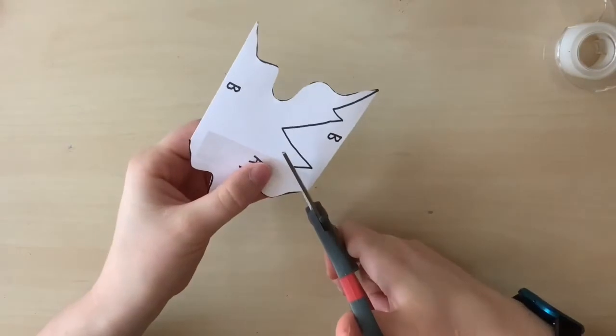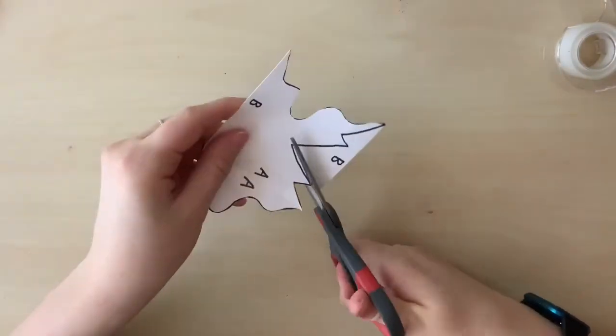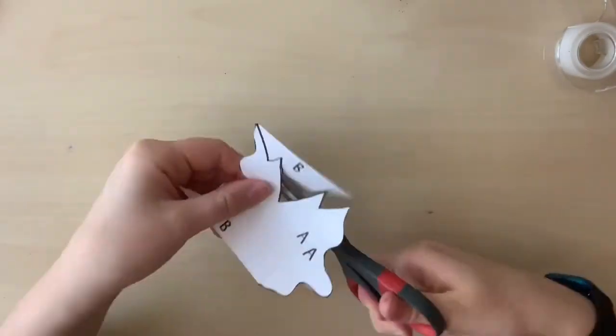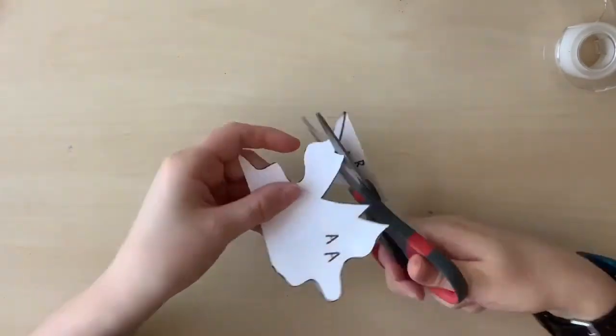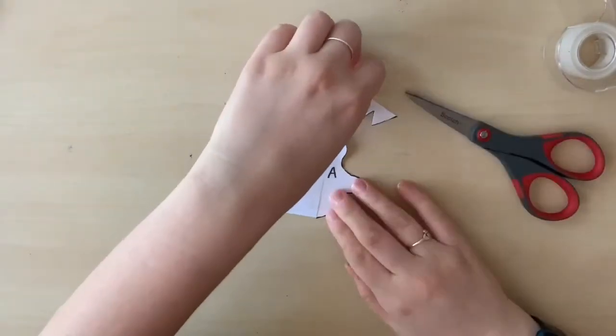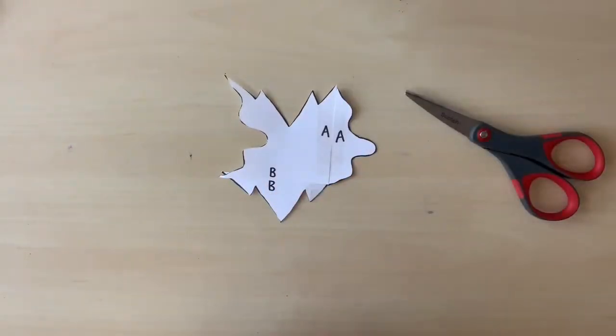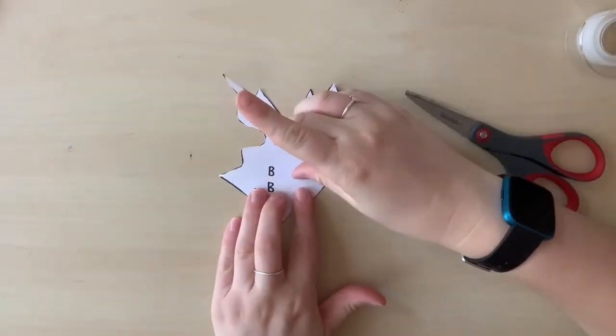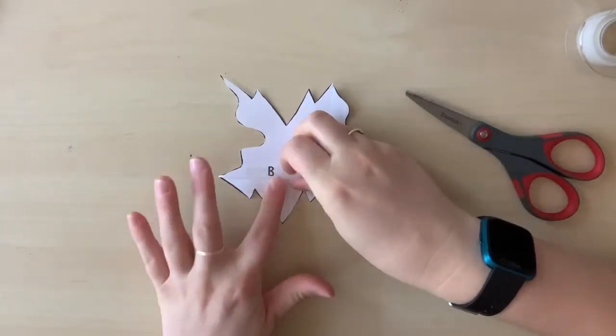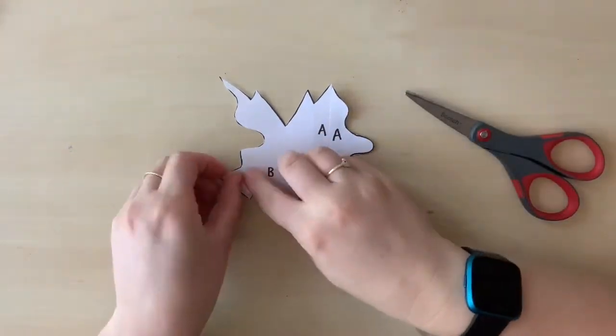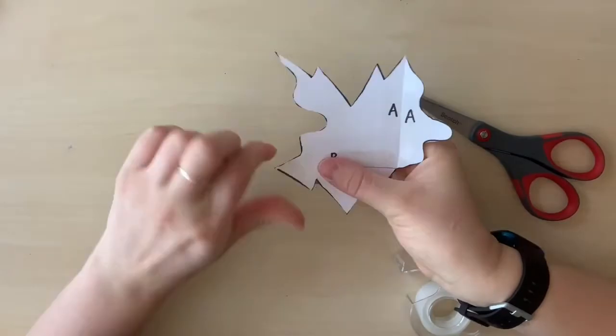And then we're going to do the same with the B. So cutting it out, making sure that there are no scraps of paper coming off. If you make a mistake, just roll with it. And then we are going to slide it down so that the B's are touching on the flat side. And then tape it together as straight as you can. I'm going to use an extra piece of tape so that the whole thing is flat and it doesn't fall apart.